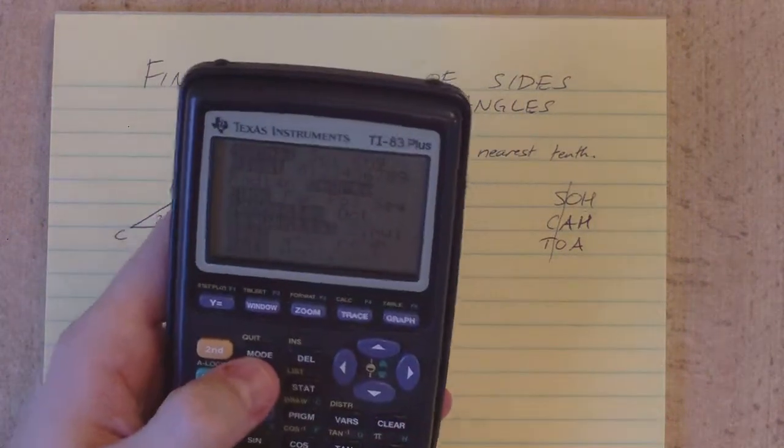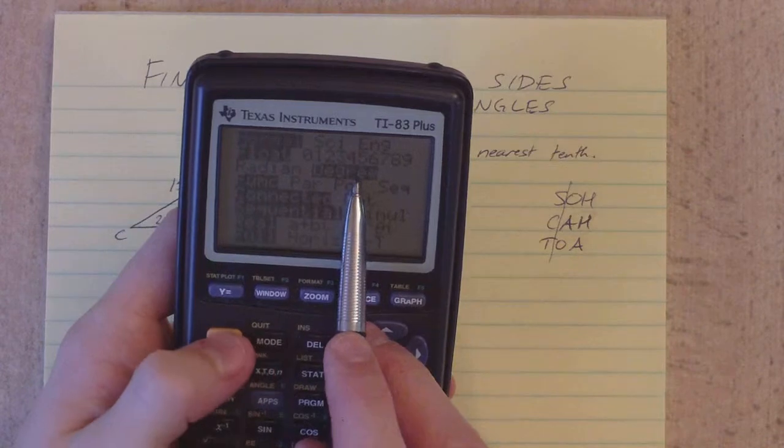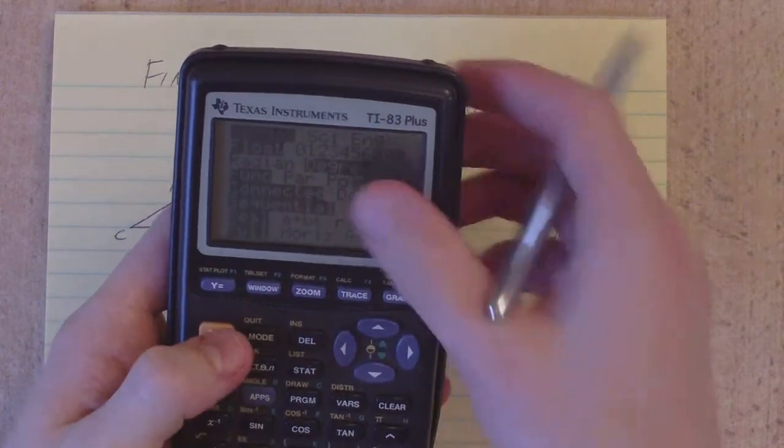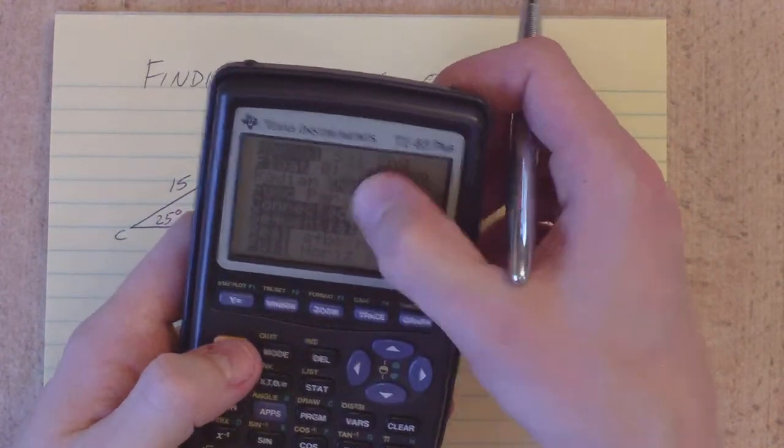Got a calculator that looks like this. Hit the mode button. You should see that degree is highlighted. In other calculators, you might see a little something in the top where it says D, E, G, or maybe just even D.